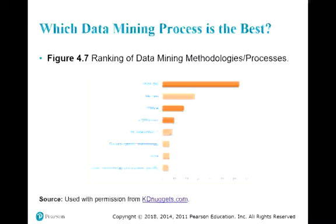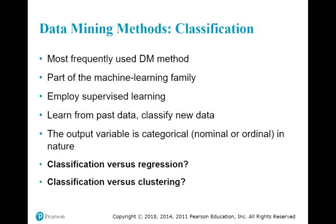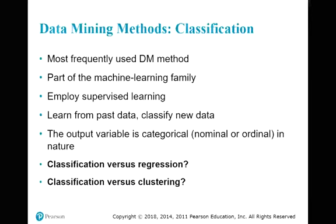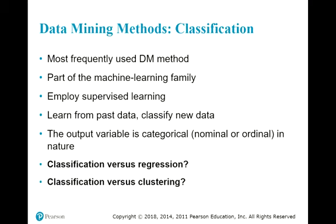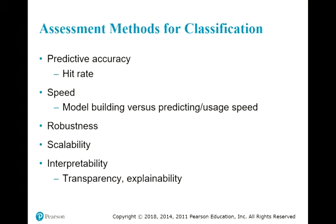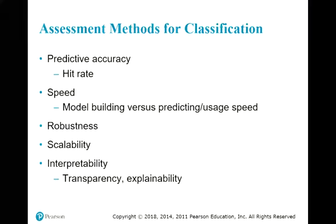The remaining part of the chapter covers different data mining methods in detail, basically in two categories: classification methods and association-type methods. When looking at a classification method and evaluating quality, we are talking about different measurements including accuracy, speed, robustness, scalability, and interpretability. When reading the textbook or taking quizzes, keep in mind these are measurements you can use to evaluate your classification methods.